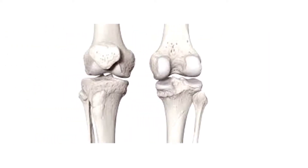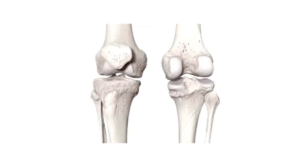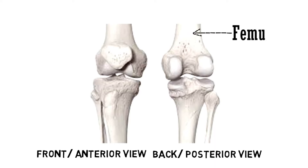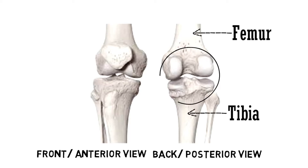These are two different views of the articulation — the front view and the back view. This is the femur bone, and this is the tibia. The area in the circle shows how the articulation looks.